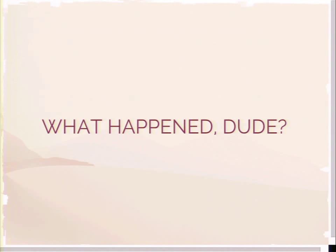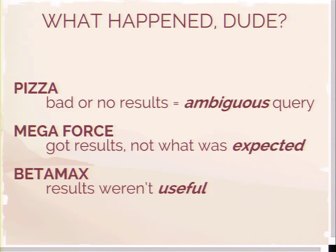So what happened here, and what does this have to do with oceanography? In the search for pizza, you gave an ambiguous query and got no results - which is often the case for oceanography when searching for data, especially when they don't know what they're looking for. With Megaforce, you found something, you got results, but it wasn't what was expected. And with the Betamax player, even though you had some data - Megaforce - you couldn't use it because you didn't have the right tools to access it.